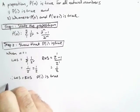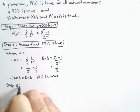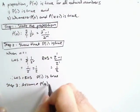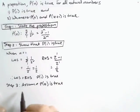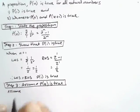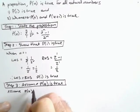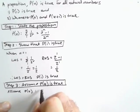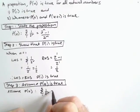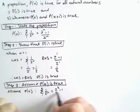Step 3 is to assume P(k) is true. I assume that P(k) is the sum of 1 over 2^r from 1 to k, because k takes the place of n, equals 2^k minus 1 over 2^k. So I have assumed that.